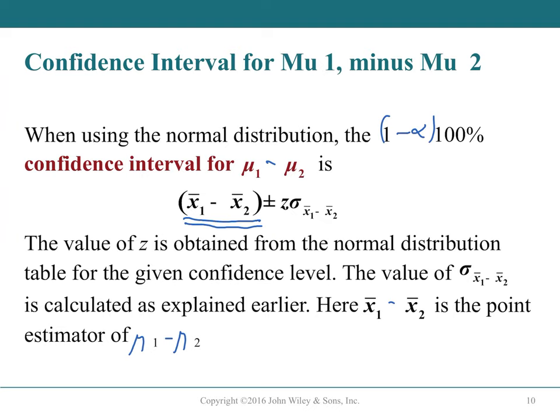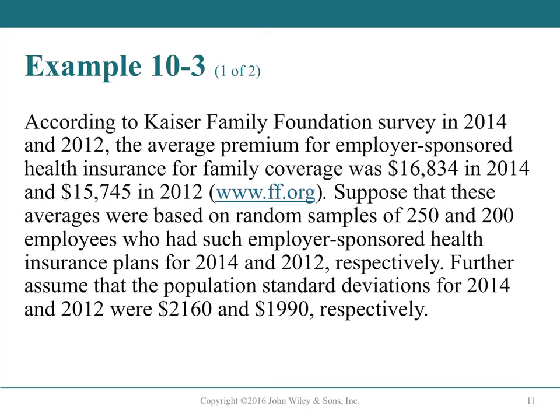The difference in sample means x̄₁ - x̄₂ is the point estimator of μ₁ - μ₂. Since the actual population means are unknown, we use the sample means as substitutes.